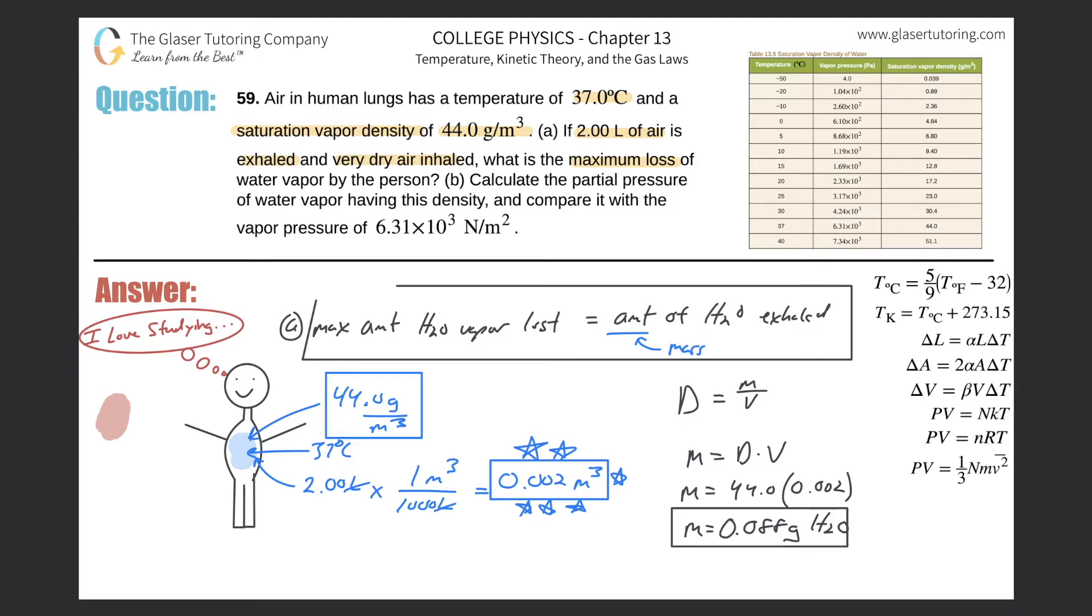Now letter B says: Calculate the partial pressure of water vapor having this density and compare it with the vapor pressure of 6.31 times 10 to the 3 newtons per meter squared.